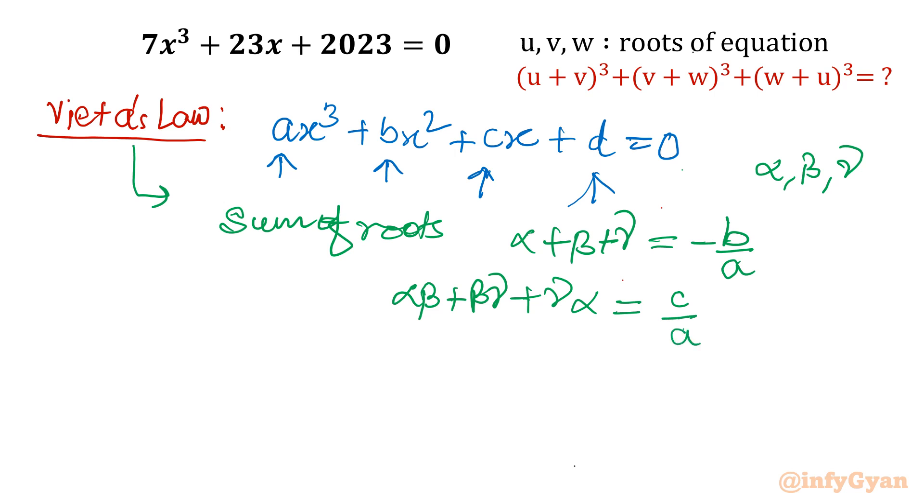Third equation is product of roots αβγ. It is constant coefficient with minus sign, constant coefficient that is d over leading coefficient that is a. This is general Vieta's theorem or Vieta's law. So we can write all the three equations anytime.